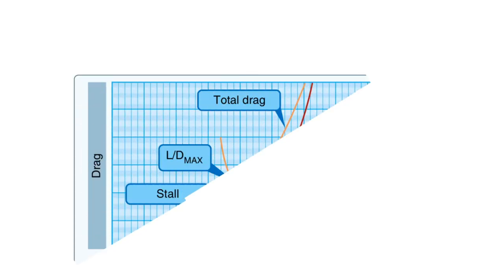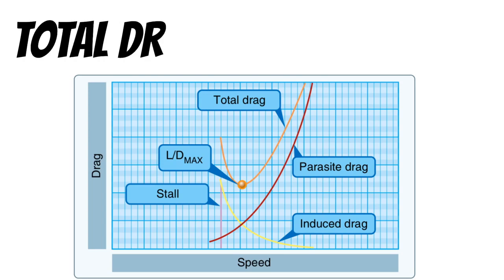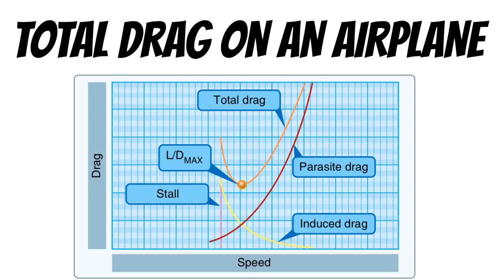But when you're dealing with aerodynamics and flying an airplane, there's another factor at play. At some point during your flight training, you may have seen this chart, which depicts the total drag that acts on an airplane during various airspeeds. As you can see, we have two types of drag that concern us: parasite drag and induced drag.